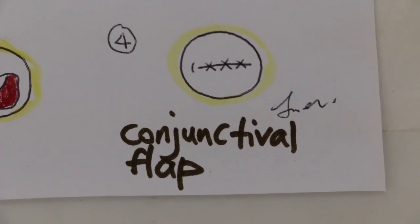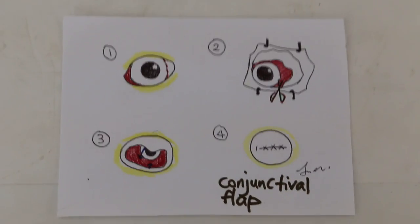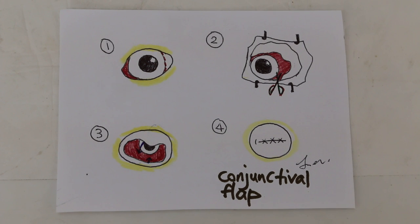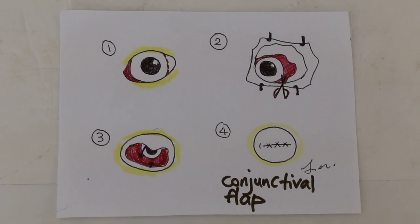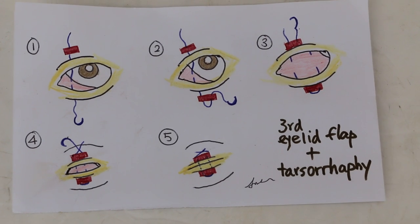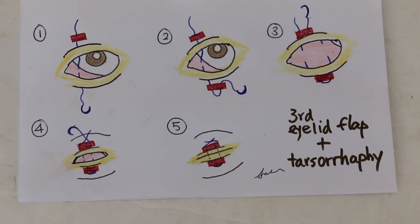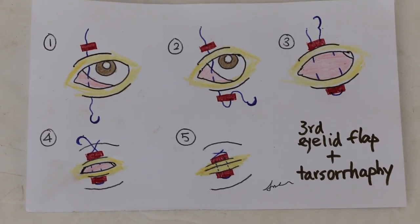It's called conjunctival flap, and it's not a guaranteed thing that it will be much better than the third eyelid flap plus tarsorrhaphy. But it seems many books, many later books, they don't recommend this method for some reason. Some of them think that it's outdated.